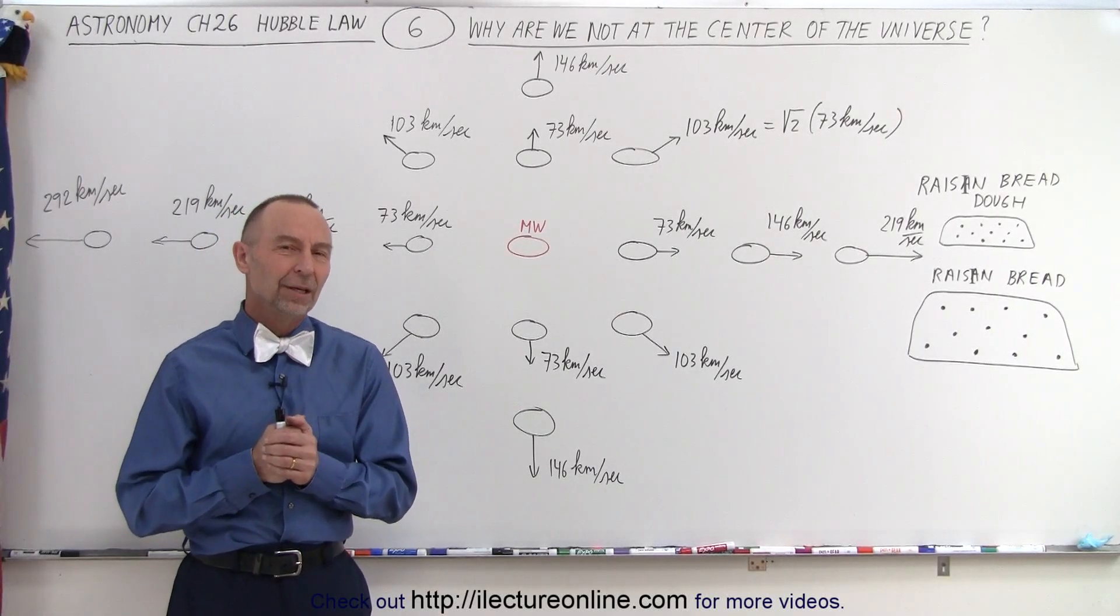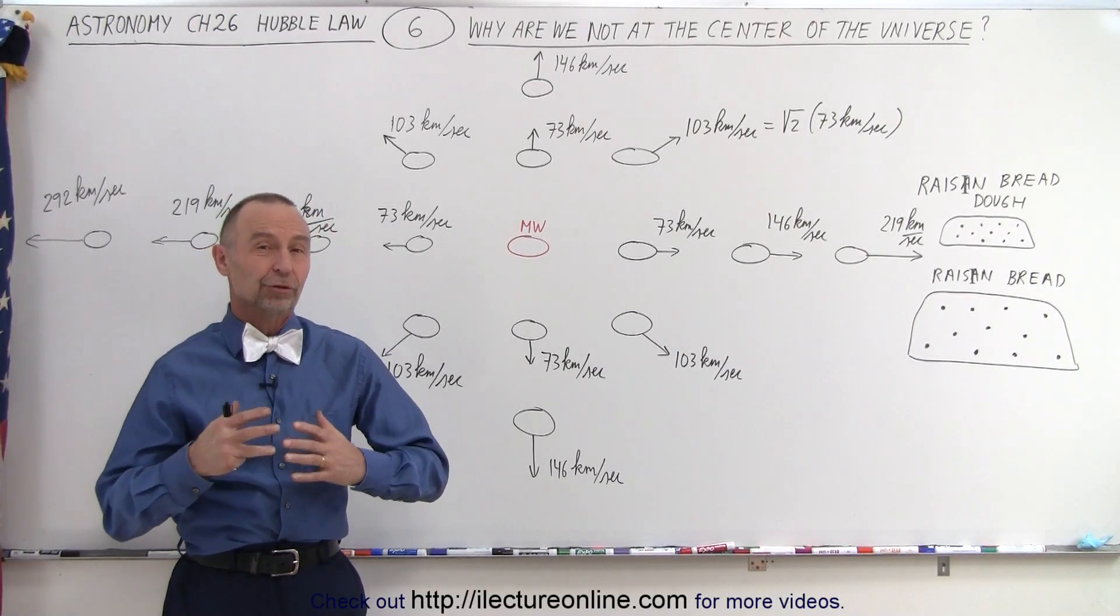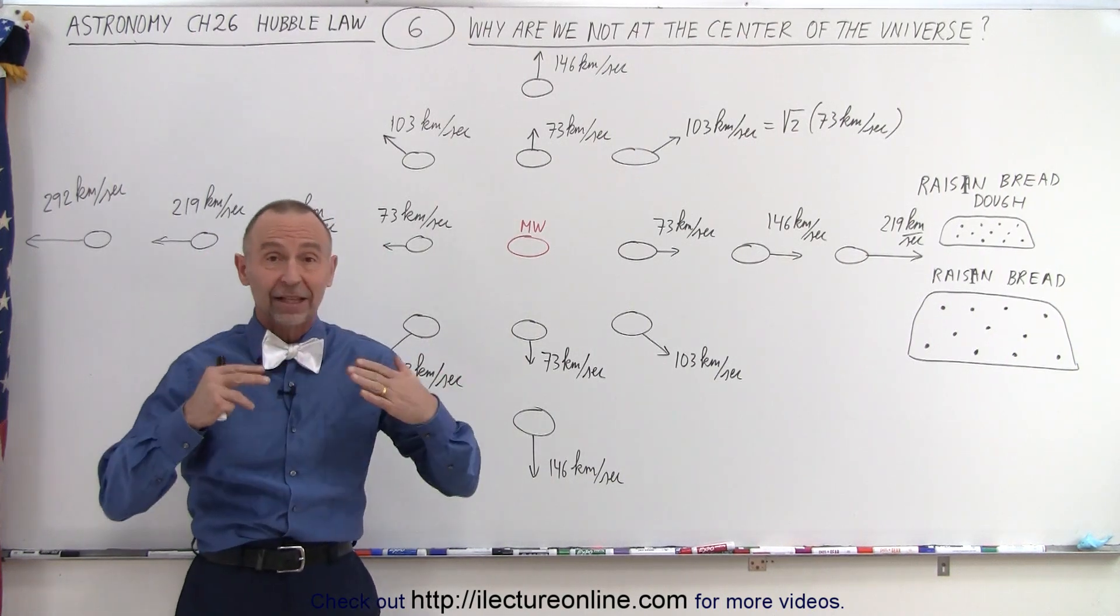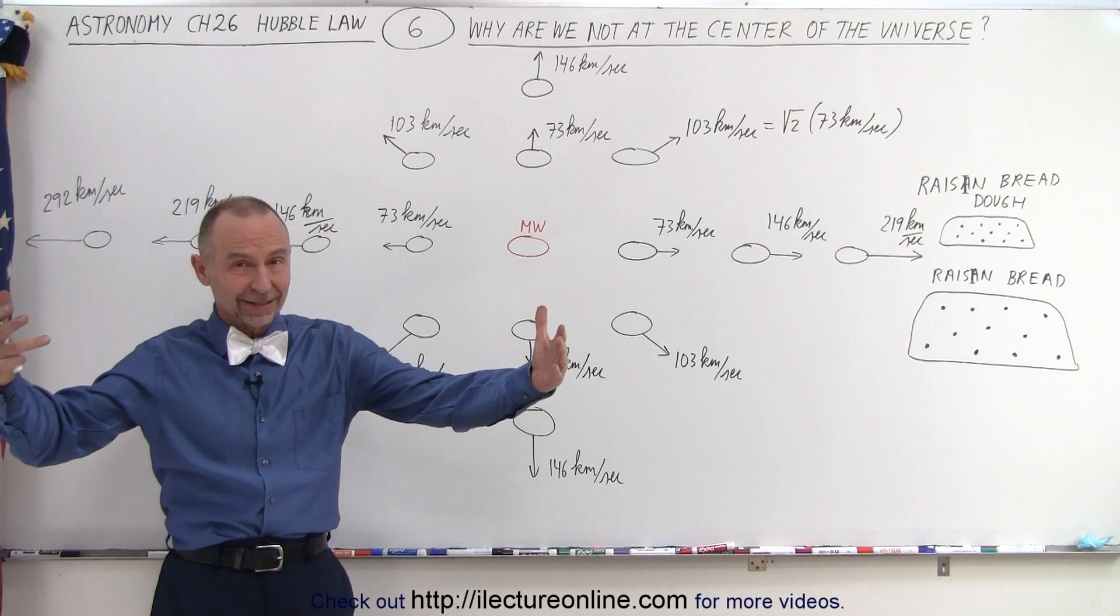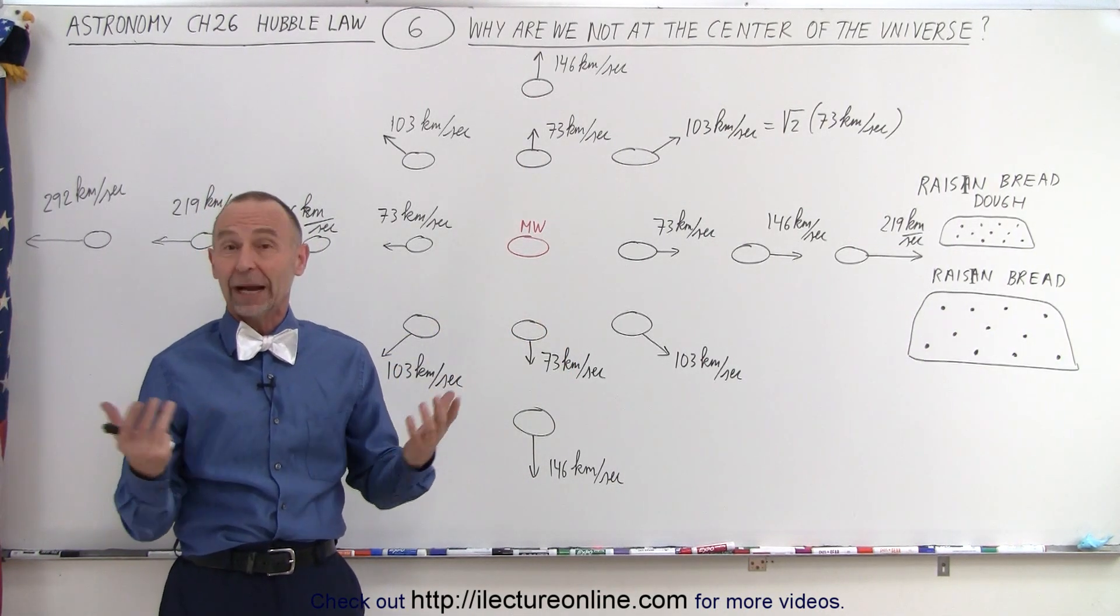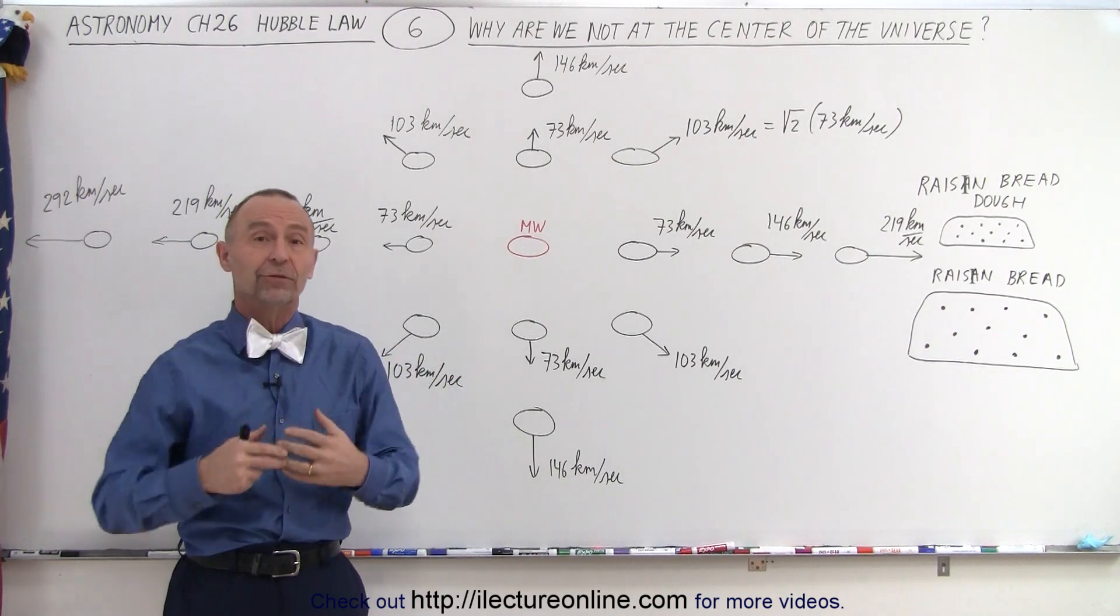Welcome to ElectronLine. When we discovered that the entire universe was expanding, and we looked around us in every direction, galaxies were moving away from us because the light we received from those galaxies was redshifted. Well, that made us think that perhaps we are in the very center of the universe.